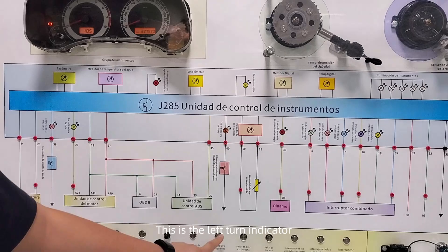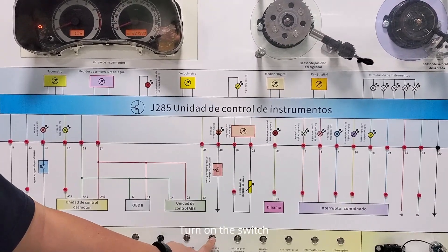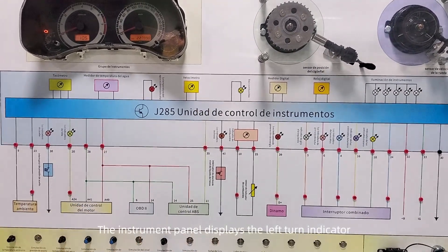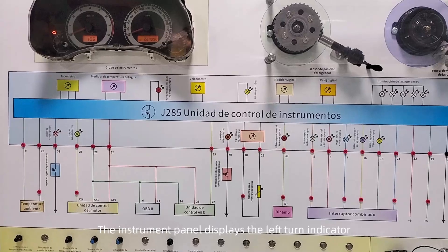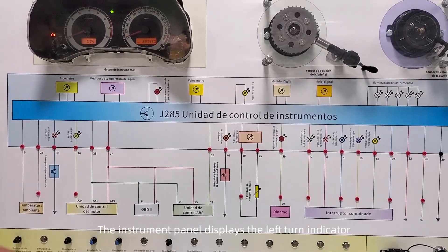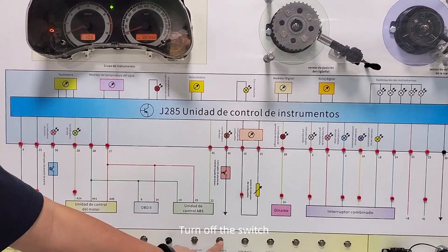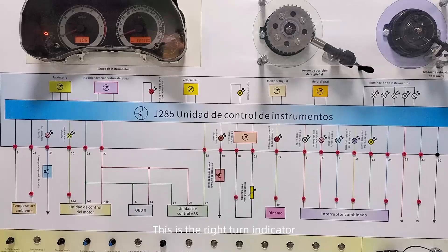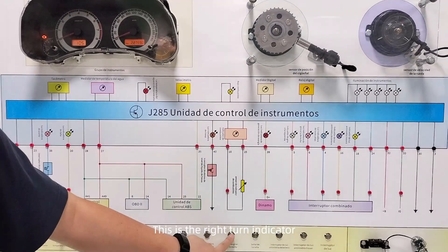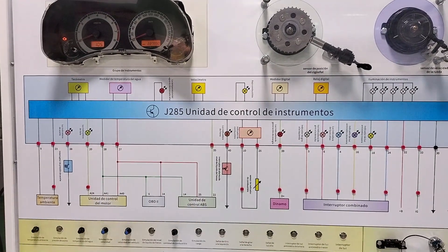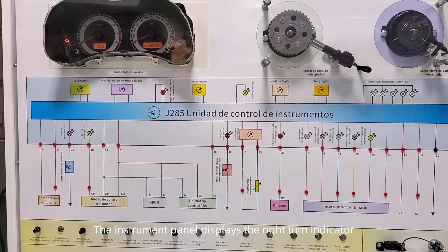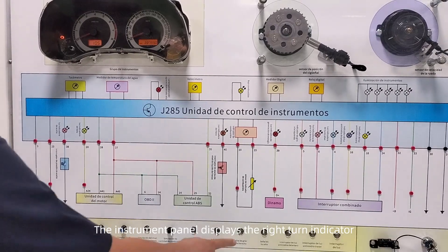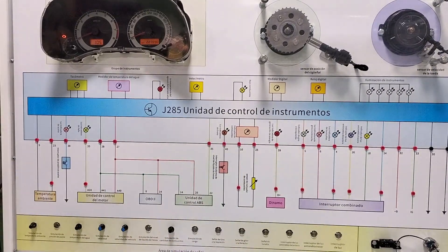This is the left turn indicator. Turn on the switch — the instrument panel displays the left turn indicator. Turn off the switch. This is the right turn indicator. Turn on the switch — the instrument panel displays the right turn indicator. Turn off the switch.